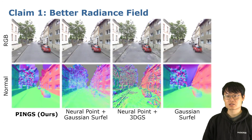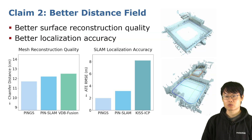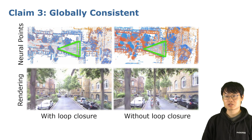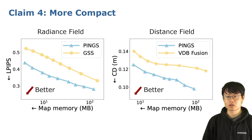From experiments, we validate that PINS can construct a better radiance field with higher RGB and geometric rendering quality. Our PINS can also map a better distance field, which leads to higher mesh reconstruction quality and higher localization accuracy when applied to a distance field-based SLAM system. Thirdly, our PINS map is elastic to map deformations caused by loop closure. We keep our radiance field globally consistent, without duplicated artifacts such as the tree in the middle of the road. Besides, PINS is more compact than previous radiance field or distance field representations.